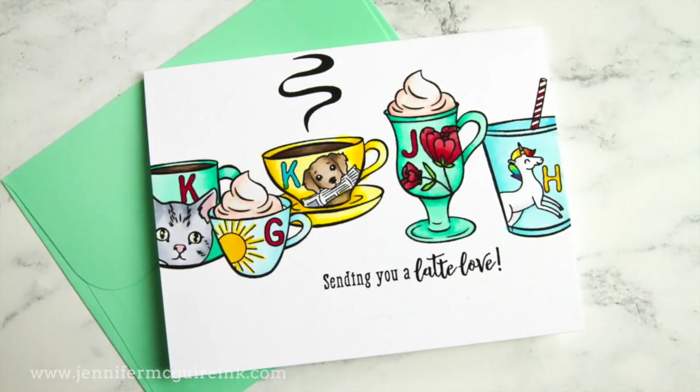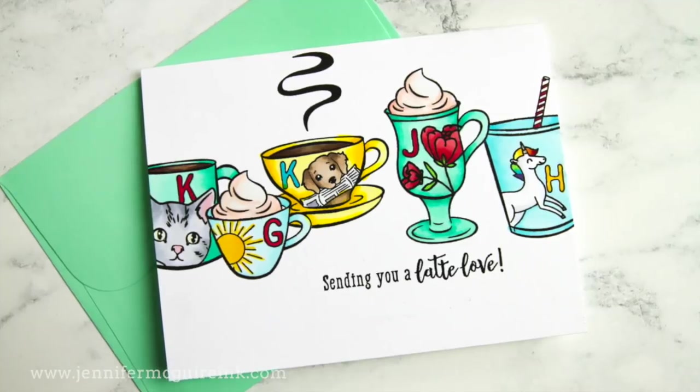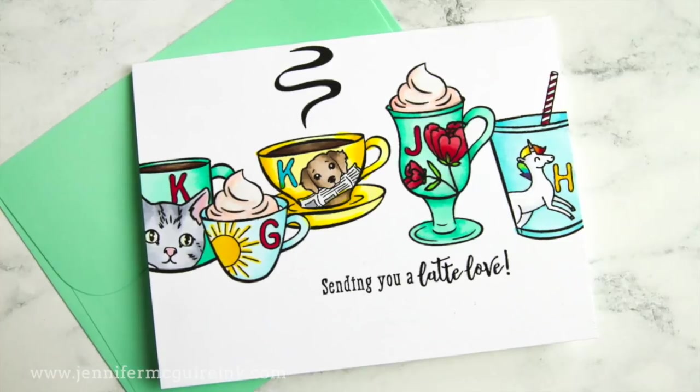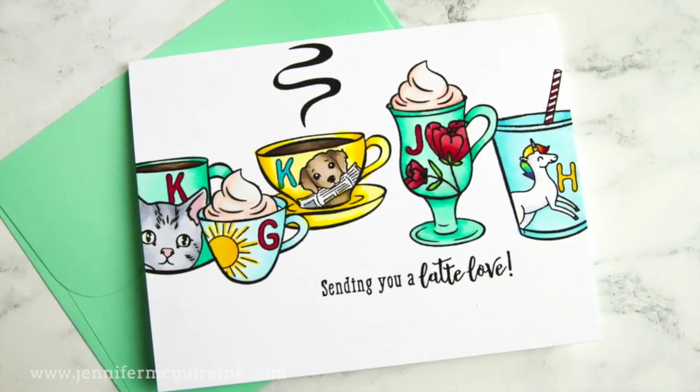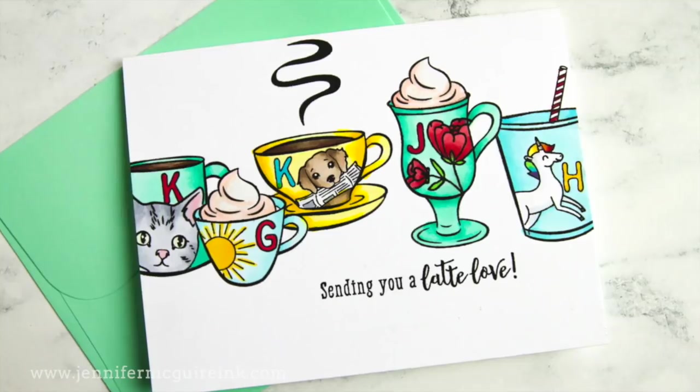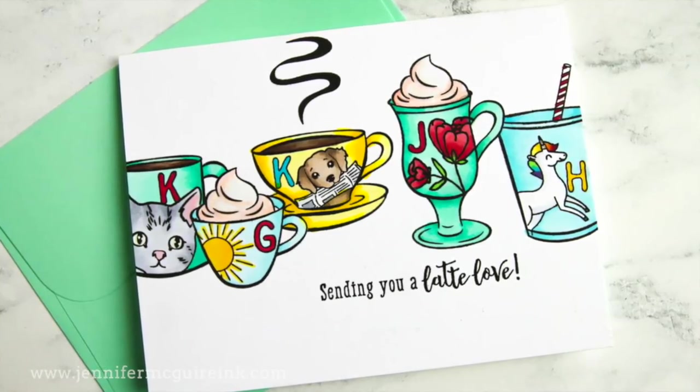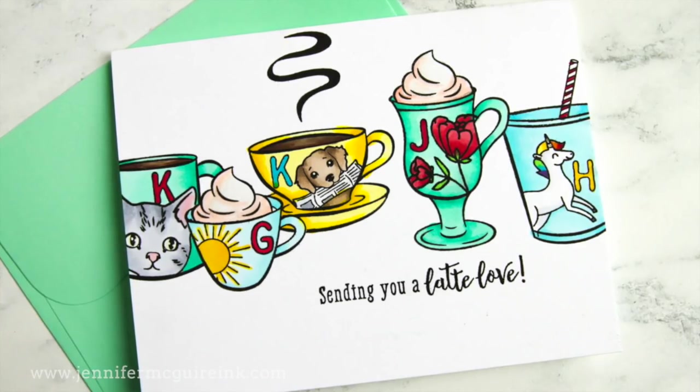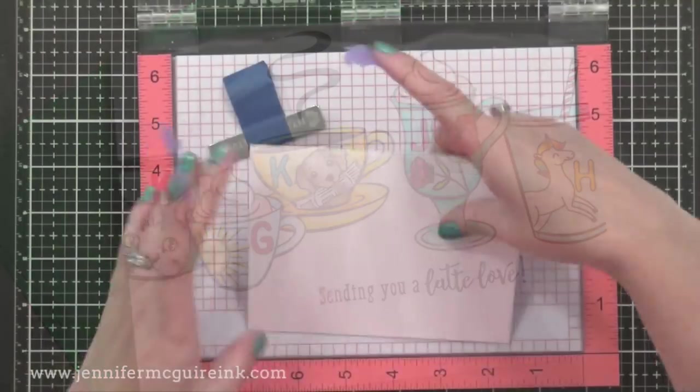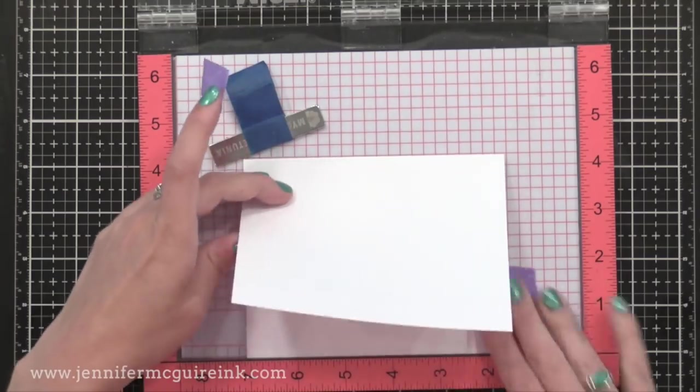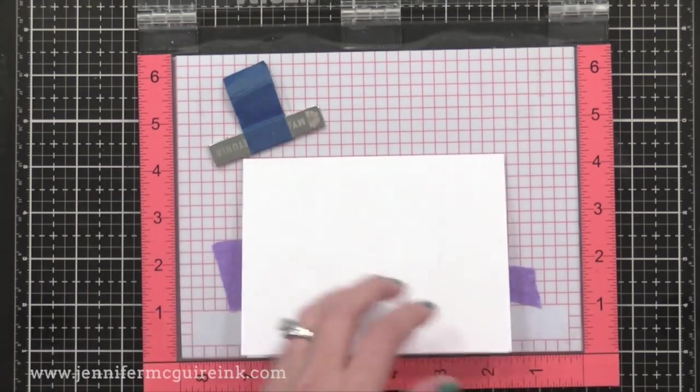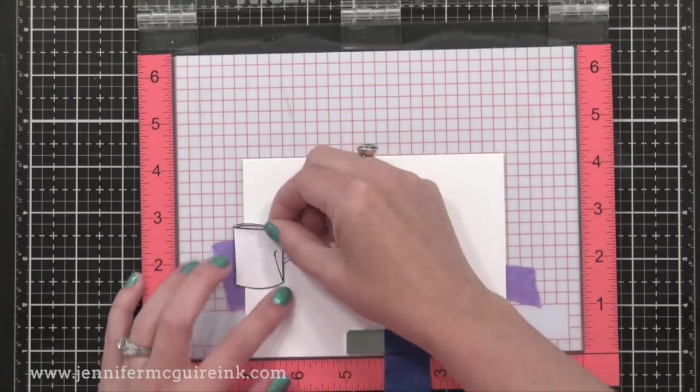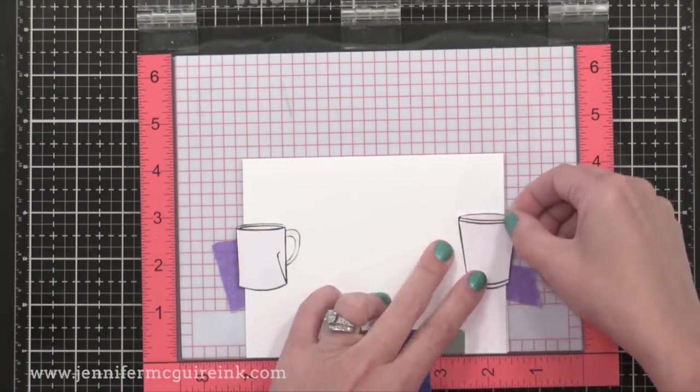Okay, now here is the big masking card where I have five different mugs where I personalized each of them for some friends of mine. I went on a girls weekend and I wanted to send this to the person who hosted us. So I put a mug for each of us that were there. Okay, so I wanted to show you how to kind of plan out masking. Remember, I talked about this in my last video. Check that out if you haven't. But here's another option. I have a four and a quarter by five and a half inch white note card inside of my MISTI. And I'm using the mask again to plan where I'm going to do stamping.